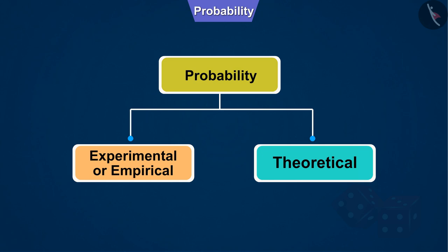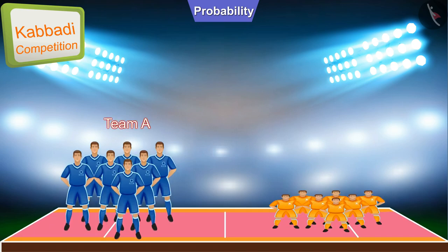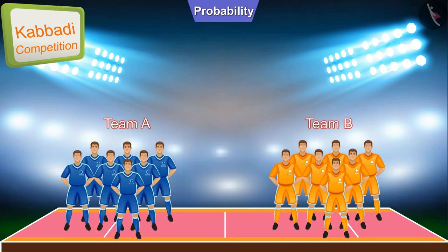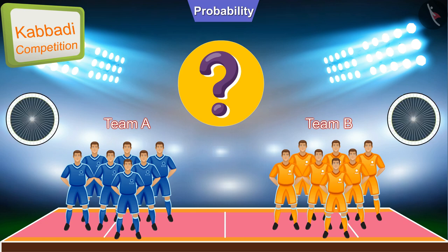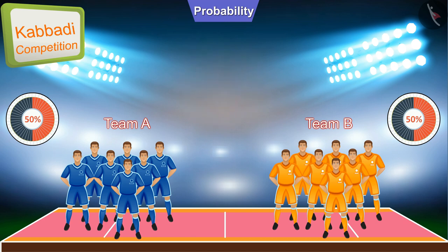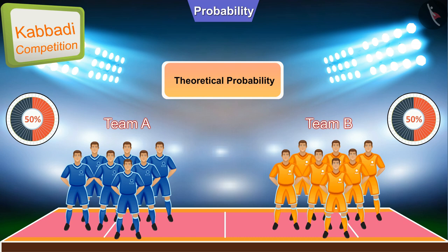Let's see an example to understand it better. Suppose a Kabaddi match is going to happen between Team A and Team B. At the beginning of the game, we do not know anything about the past performance of both teams. In such a situation, if we have to predict which team will win, we can say that both have a 50-50% chance of winning. We call this the theoretical probability.